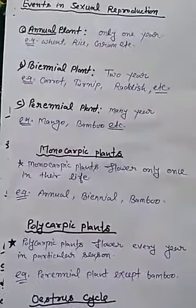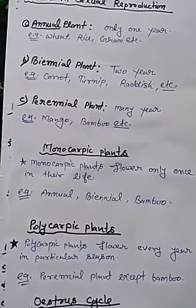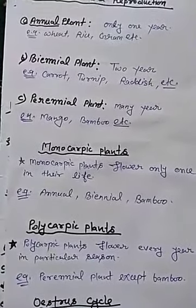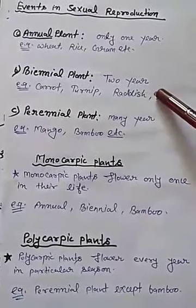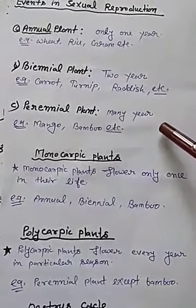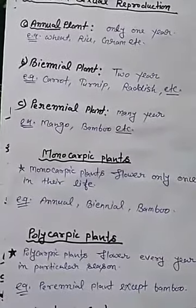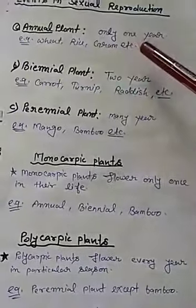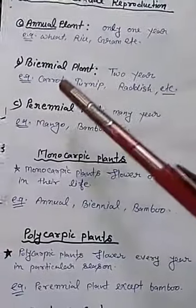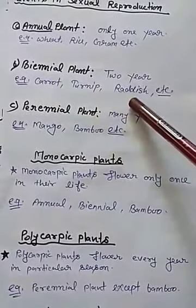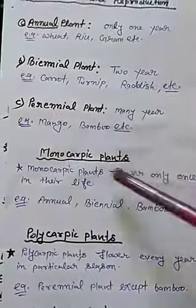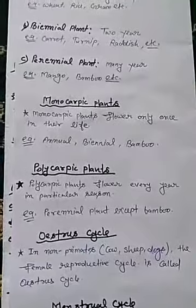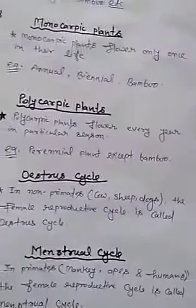So on the basis of life span, the plant may be classified into annual, biennial, or perennial. Life span of only one year is annual plant. Examples of annual plants are wheat, rice, gram, etc. Examples of biennial plants are carrot, turnip, radish, cabbage, etc. And examples of perennial plants are mango and bamboo.